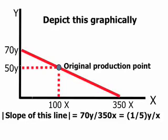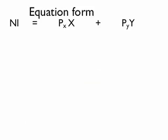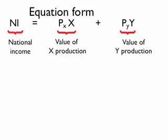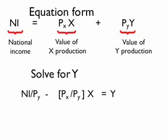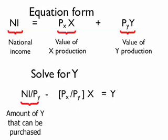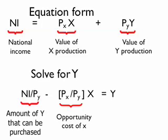We can now depict this in a more general form using an equation of national income. National income is going to be equal to the value of X production plus the value of Y production. We can rearrange this by solving for Y, and we get the following equation, where the Y-intercept is given by the national income divided by the price of Y, and where the slope of the line is the ratio of the prices, PX over PY, which is the opportunity cost of purchasing X.